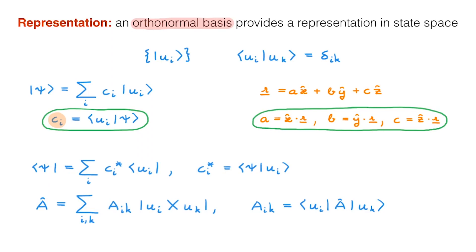In principle, we can solve a quantum problem using kets, bras, and operators written in any basis. However, the maths can be widely different depending on which basis we choose. This is the same that happens when we work with Euclidean vectors. For example, if we have a problem with spherical symmetry, we could use a Cartesian basis to solve it, but the maths would be lengthy and cumbersome. If instead we use a spherical basis, then the maths become simple and transparent. In the same spirit, one of the most important steps when solving a problem in quantum mechanics is to choose a good basis before we start. To do this, it is obvious that it will be very important to be able to change from one basis to another, and this is precisely what we'll explore in this video.